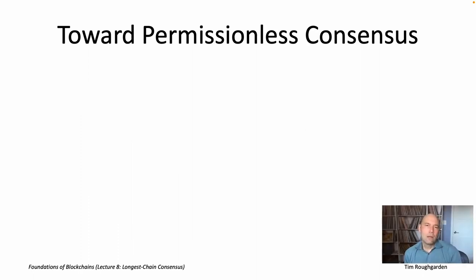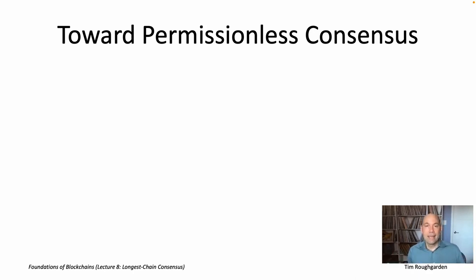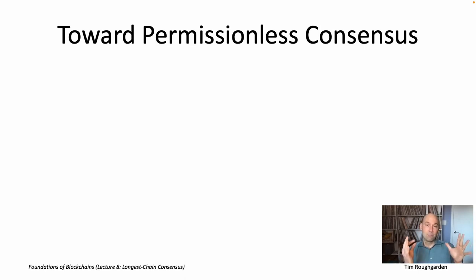That brings us to the end of lecture eight — a rather important and correspondingly long lecture on longest chain consensus. Throughout lecture eight, I focused primarily on the permissioned setting: a known set of nodes that remains the same and just runs the protocol from beginning to end. I did that partly for consistency with the previous six lectures, and partly because it's worth appreciating the innovations of longest chain consensus in the safe confines of the permissioned model, without worrying about all the additional details required to make it work in the permissionless setting — which is what we start talking about in lecture nine.